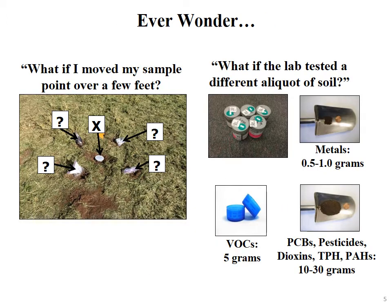Looking at discrete soil sample data — I used it in my own career for the first ten years. We always wondered when out in the field: what if I move my sample point over a few feet? Would I get the same number? What if the laboratory tested a different subsample or aliquot of soil from the four-ounce jar of soil or sediment that I gave them? Would I get the same number?